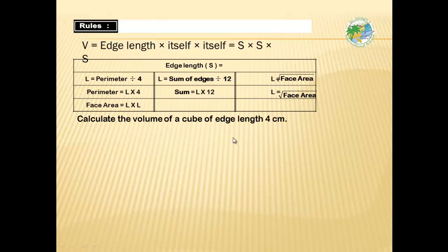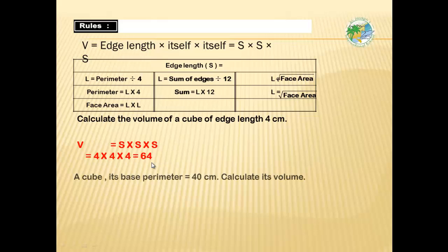Now, how we can calculate the volume of a cube of edge length 4 centimeters? This is an easy question. We have edge length. If we have edge length, we can calculate the volume of cube by multiplying side length times side length times side length. So, 4 times 4 times 4. The volume equals 4 times 4 times 4 equals 64 centimeter cube.